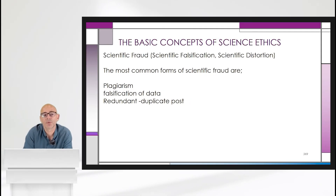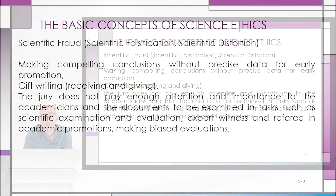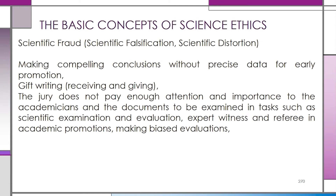The most common forms of scientific fraud are plagiarism, which is perhaps the most common one, falsification of data, and redundant or duplicate publication. Making compelling conclusions without precise data for early promotion is also another type of scientific fraud. Gift writing — that is, writing a paper for someone else without any contribution from that person but putting only their name on it — is another example.